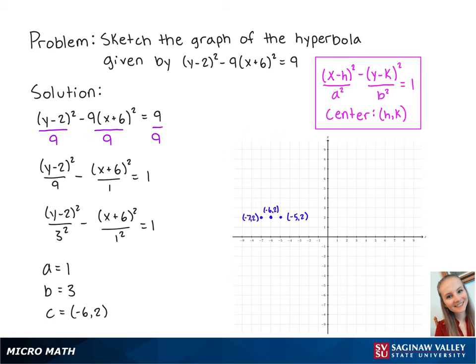Since b is equal to 3, we're going to graph two points, 3 above and 3 below the center. So the first point is at (-6, 5), and the second point is at (-6, -1).